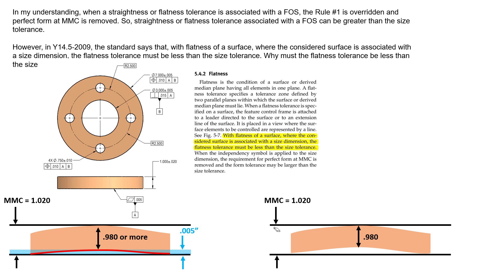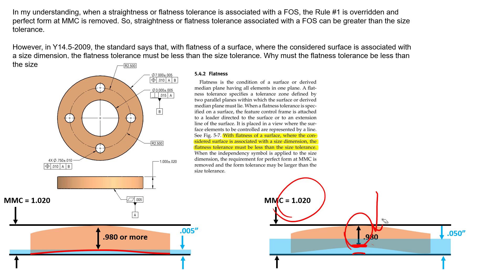If we consider raising that flatness tolerance beyond five thousandths — beyond the forty thousandths of size tolerance, perhaps to something like fifty thousandths — we would never actually get beyond forty thousandths of flatness. The difference between 0.980 and 1.020 is forty thousandths, so we'll never be able to deviate beyond forty thousandths. That would inherently push the 0.980 point beyond the LMC limit to something like 0.970 or smaller, meaning we would begin to fail the size tolerance before we could ever utilize the entire flatness tolerance.